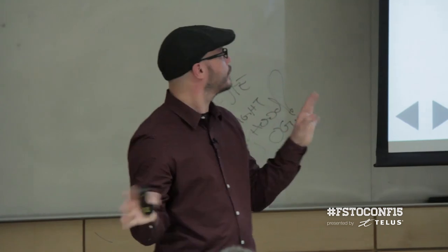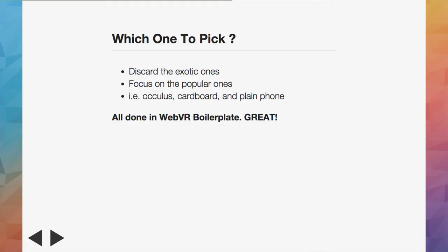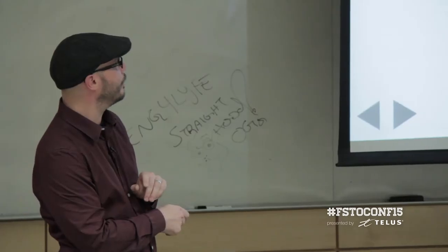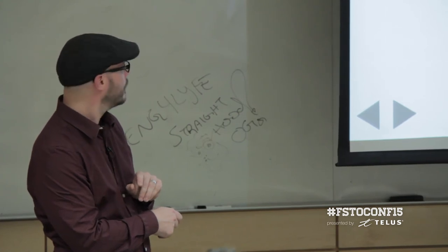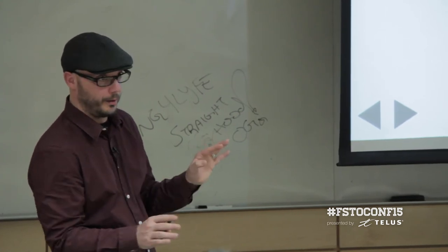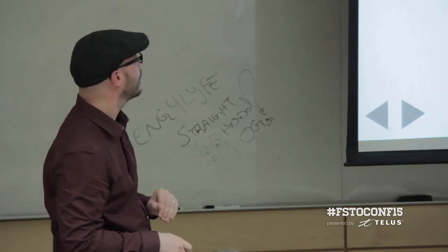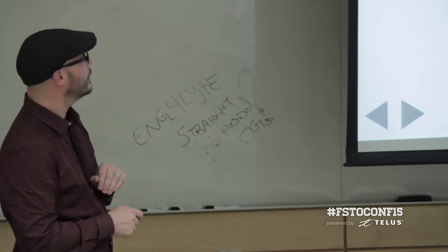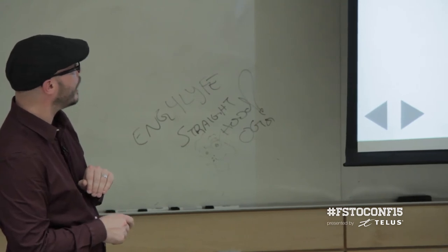The good strategy, according to me, is to discard all the exotic ones. Nobody wants to play with an anaglyph. Nobody wants to play with a parallax barrier. Focus on the actually popular ones. Currently that's Oculus, Google Cardboard, and a plain phone - as if you don't need anything more than your phone today.